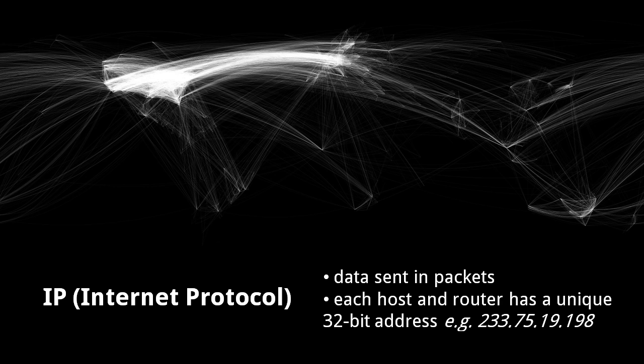The standard internet protocol, IP for short, sends data in discrete chunks called packets. In IP version 4, the version used for most of today's internet traffic, each host and router is known by a unique 32-bit address. By convention, the 4 bytes of these addresses are each expressed as an integer between 0 and 255, and the 4 integers are separated by dots. For example, 233.75.19.198 is an IP version 4 address.